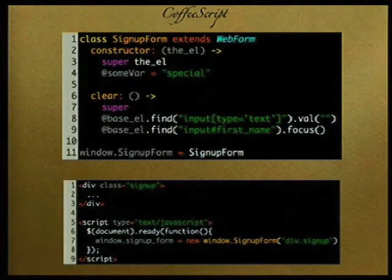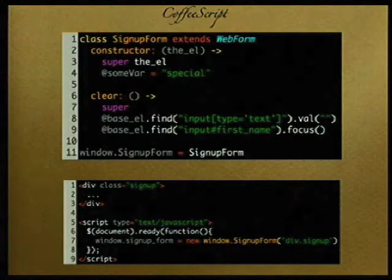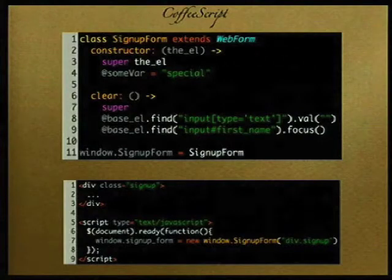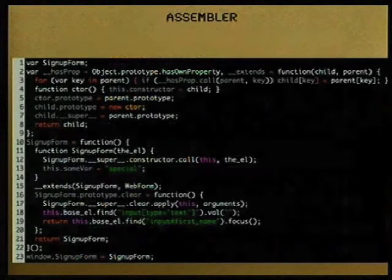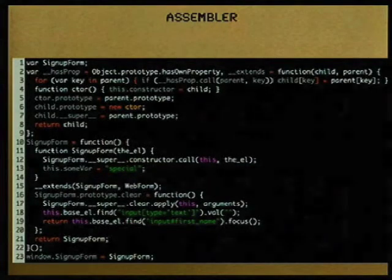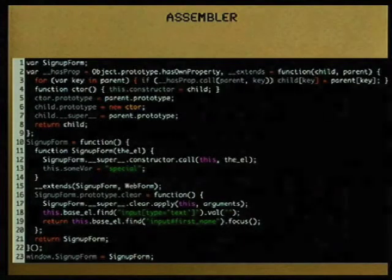Here's how you might use that — you have a div that's a sign-up div with form elements inside, and this part is where you actually instantiate your new class. You reference it as 'window.SignupForm', pass it whatever the base element is, and then it just operates on your form. And this is what the SignupForm actually looks like in JavaScript once compiled — it sets up the prototype chain and does all the funky stuff you need to do in JavaScript to make that work.